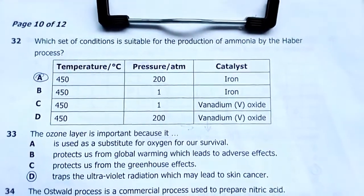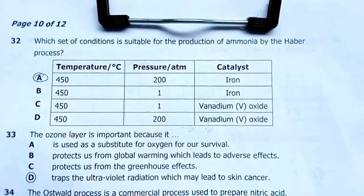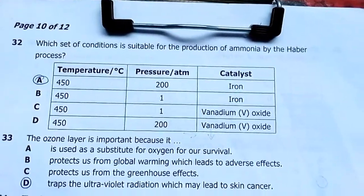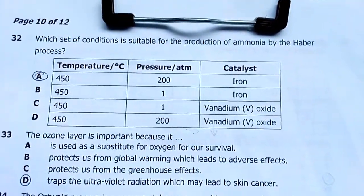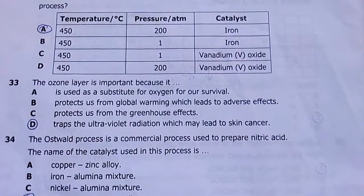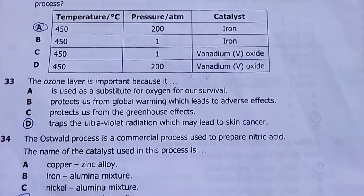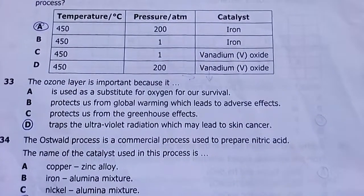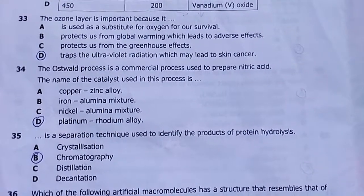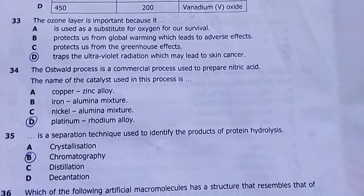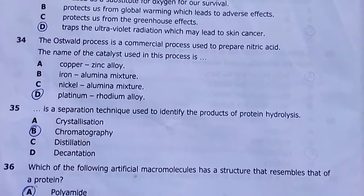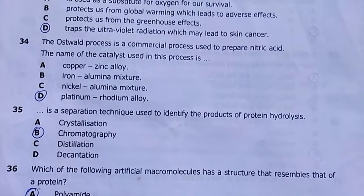Number thirty-two: which set of conditions is suitable for production of ammonia in the Haber process? Iron is the catalyst, so my answer is A — 200 atmospheres, iron catalyst, 450 degrees Celsius. Number thirty-three: the ozone layer is important because it absorbs UV radiation which may lead to skin cancer. Answer D. Number thirty-four: the Contact process — the commercial process used to make sulfuric acid — uses platinum-rhodium alloy as the catalyst. Answer D.